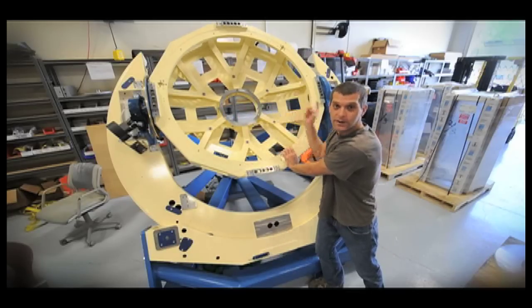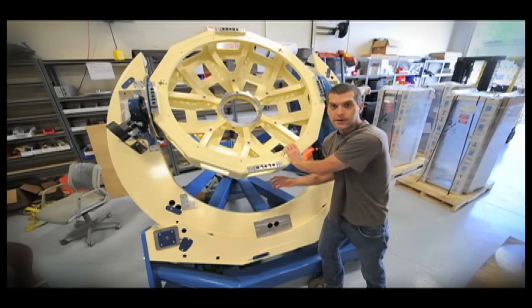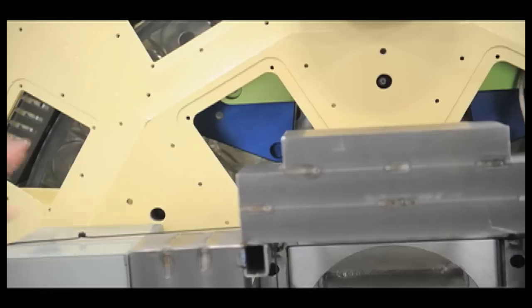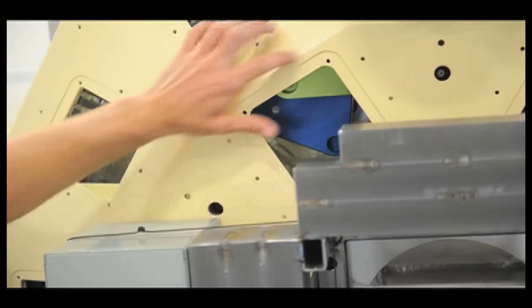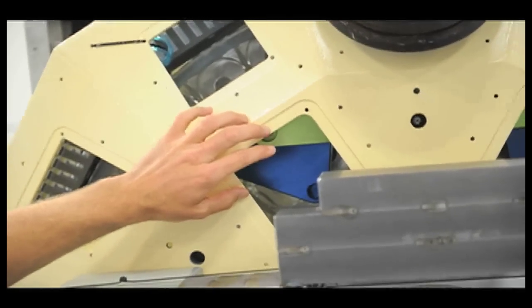The mirror cell, the blue trunnions here, the C-ring, the sandwich, the base—it all gets assembled and aligned and shipped to site as one unit. So there's various holes in the back of the mirror cell. These are access holes to unclip the primary mirror to remove the mirror for re-coating.